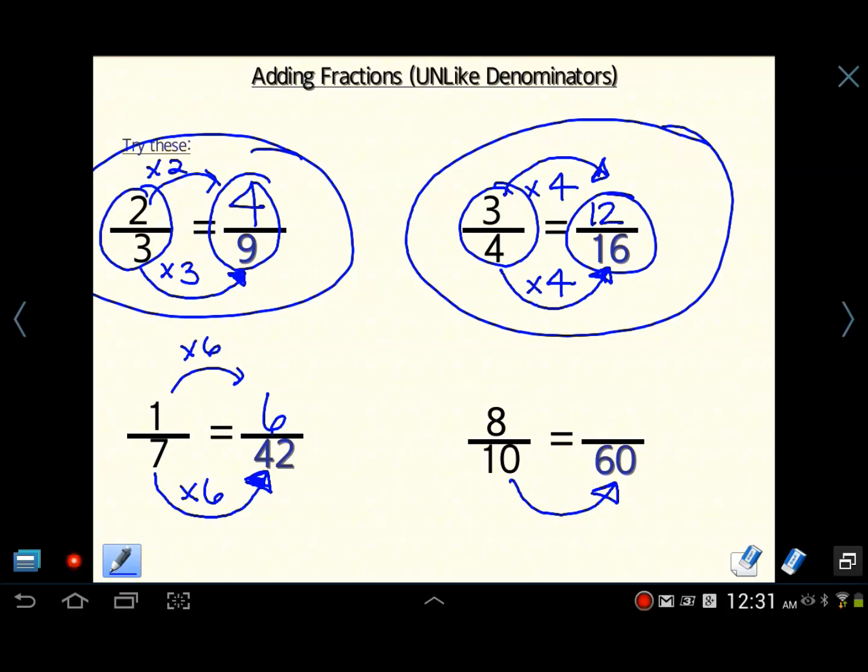And for this last example, how many times does ten factor into sixty? Sixty divided by ten is six. Ten times six is your multiplying factor. And we're going to do the same thing times eight. Eight times six is forty-eight.